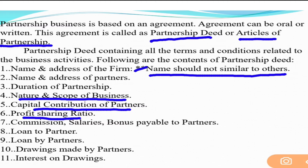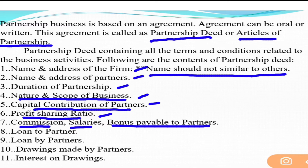So the deed covers: firm's name, who the partners are, duration, nature of business, how goods are stored, capital invested by each partner, profit sharing ratio, and whether the firm can pay salary, commission, or bonus. If these are not written in advance, no partner will receive any salary, commission, or bonus — no matter how much work they do.